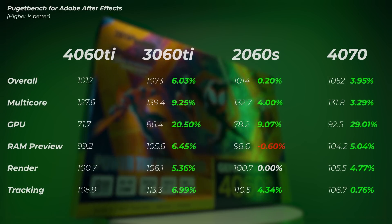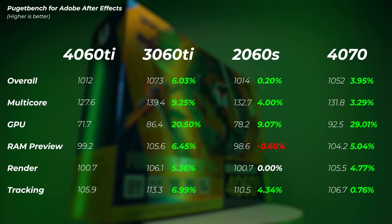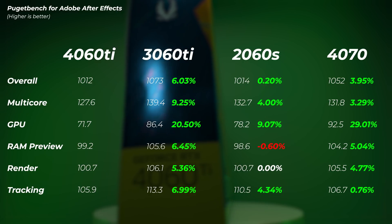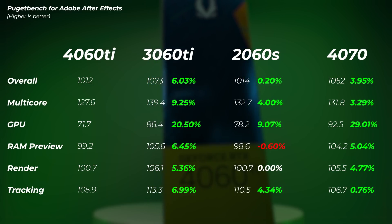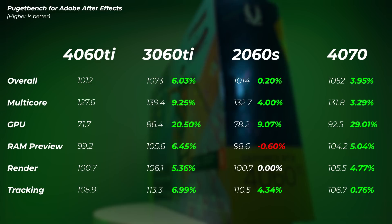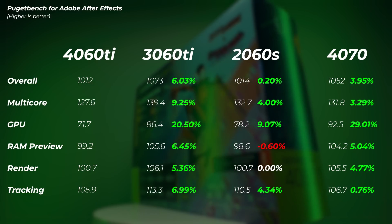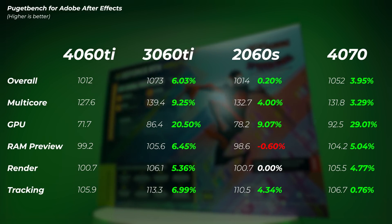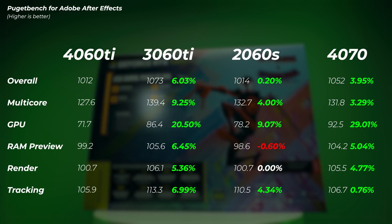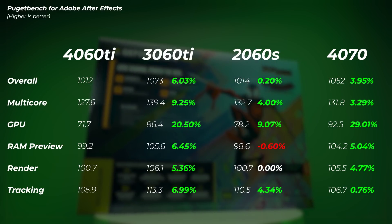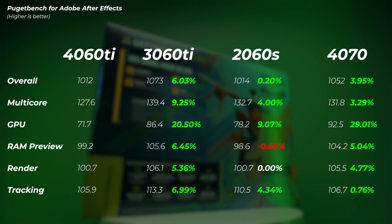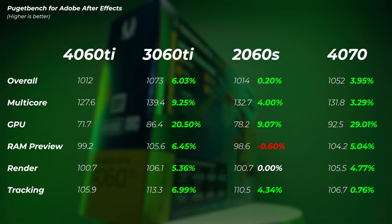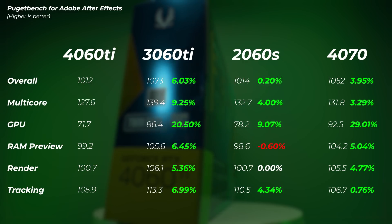In After Effects, the 3060 Ti is about 6% faster overall and 20% faster in GPU scores — though I'll give some benefit to the MSI RTX 3060 Ti here, as it performed exceptionally well, so take that with a grain of salt. Looking at the RTX 2060 Super: it's 0.2% faster overall, and 9% faster in GPU scores with the latest driver. I had to retest the 2060 Super — I couldn't believe a card from two generations ago is 9% faster in GPU scores. The 4070 is about 30% faster in GPU scores.